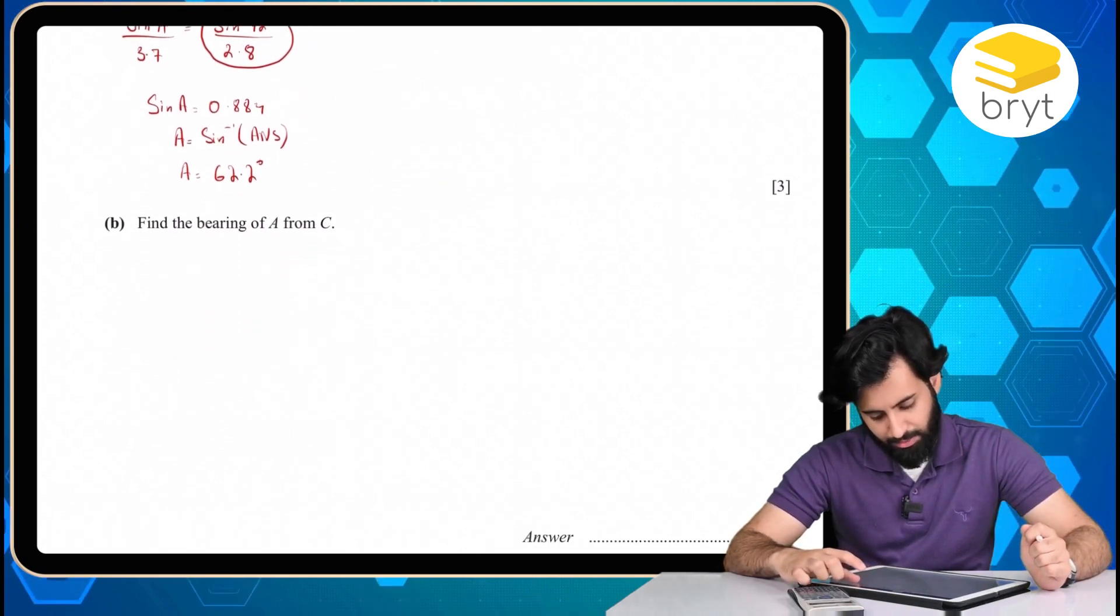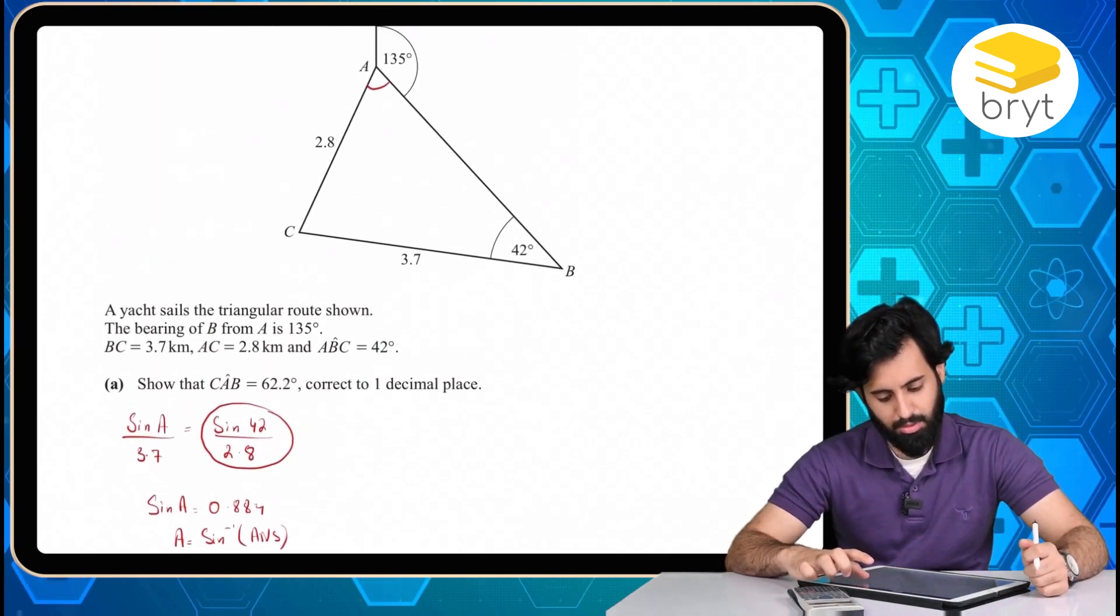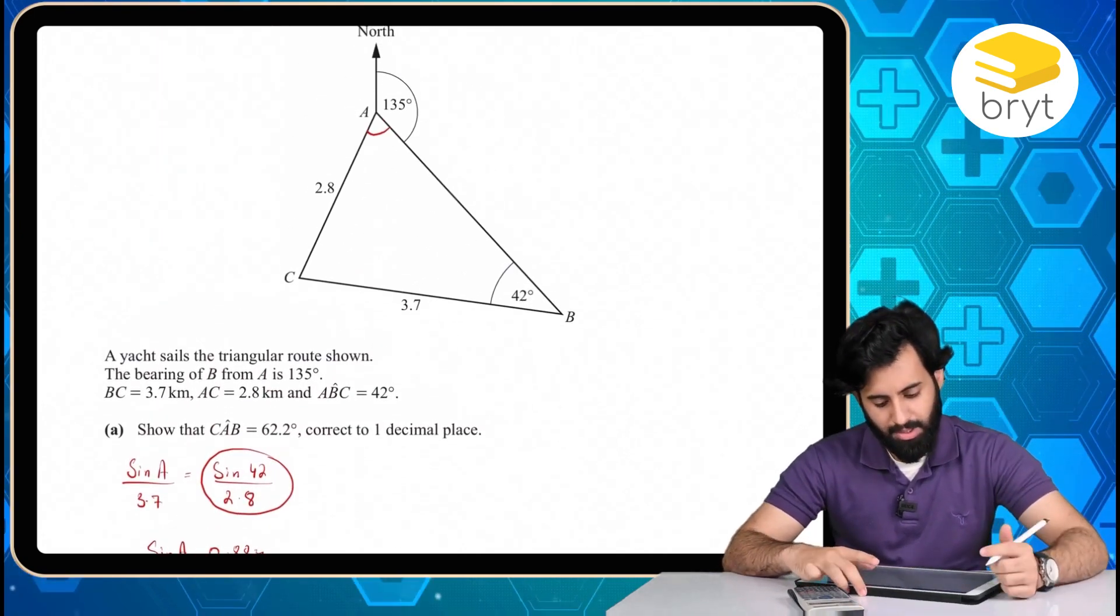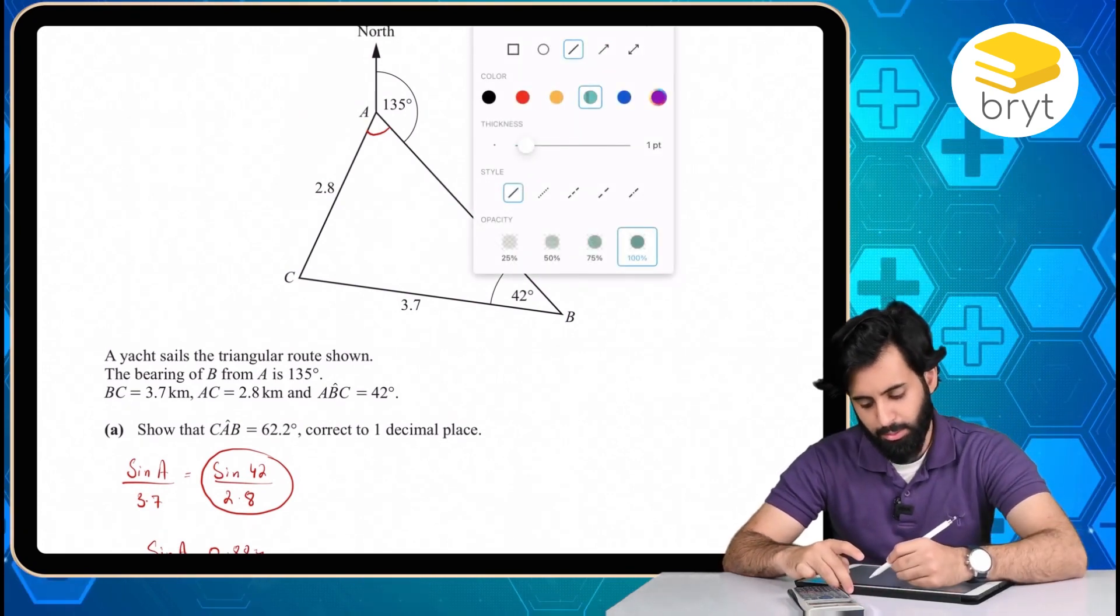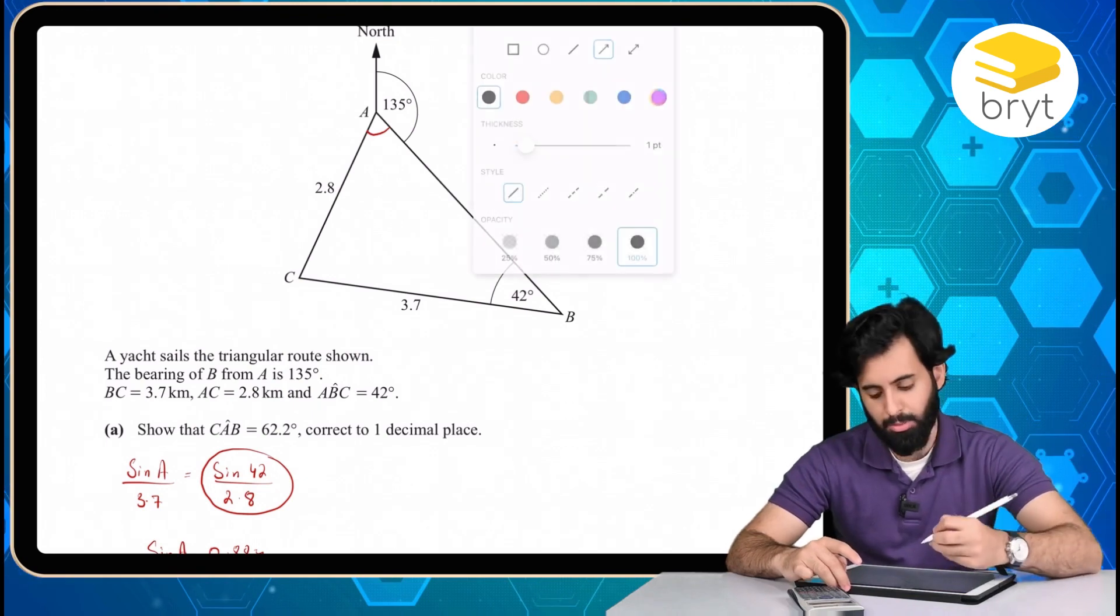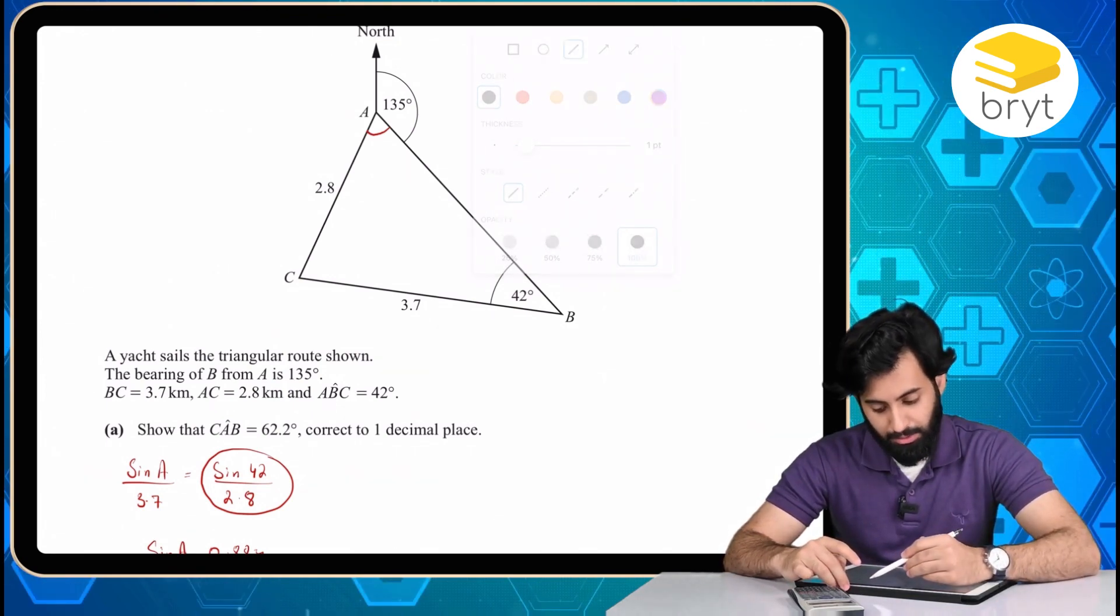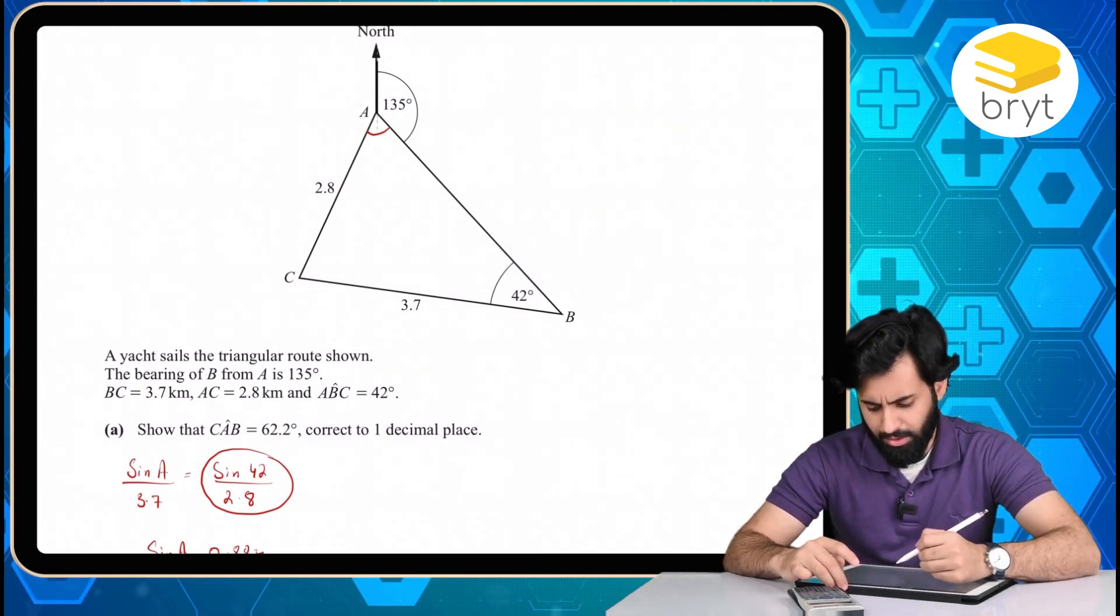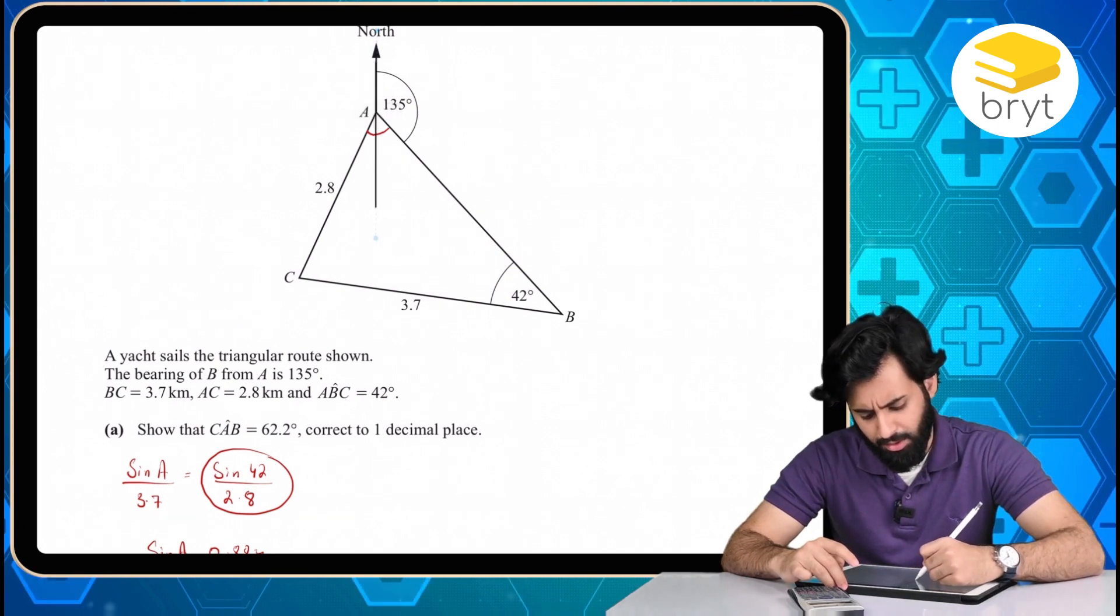Then it says find the bearing of A from C. And this is a two mark question. So A from C. So in order to work out the bearing of A from C, well, there are two ways to go about it. We can use the concept of reverse bearing. In fact, that's what I would do. That makes things a lot easier.